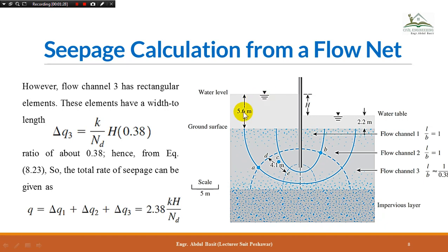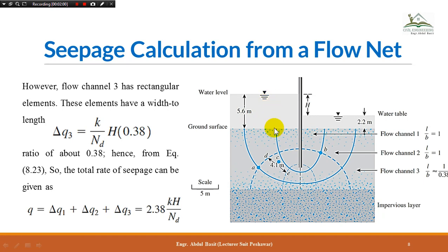On the upstream side, the water level is 5.6 meters (an assumed value), and on the downstream side the water level is 2.2 meters, so there is a loss of water from upstream to downstream. A sheet pile is installed in this pervious soil at the mid-point. The water on the upstream side will try to move downward and around the sheet pile toward the downstream side, and that movement through the soil is the seepage.